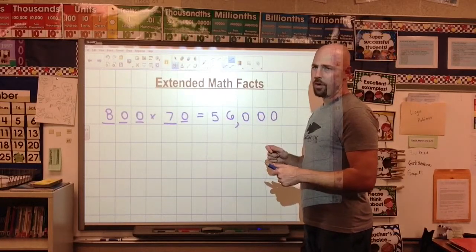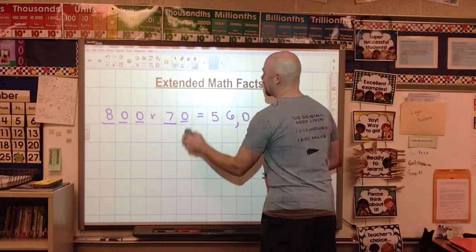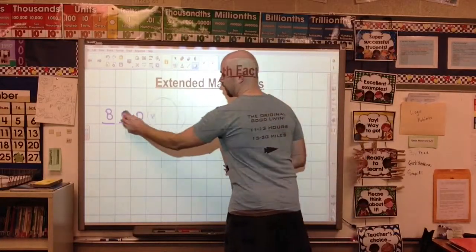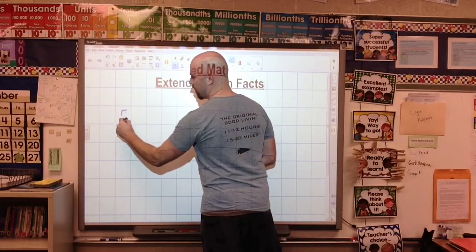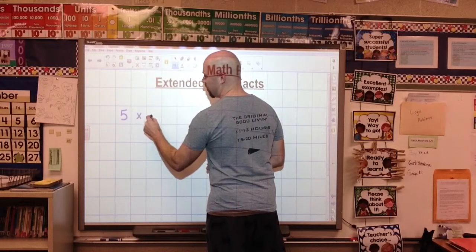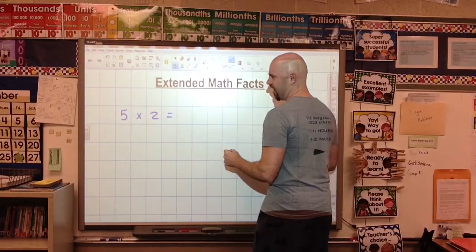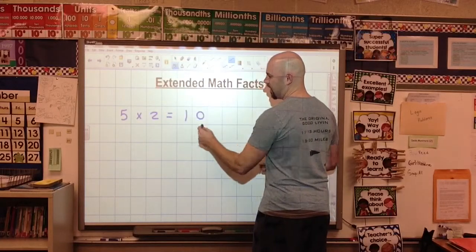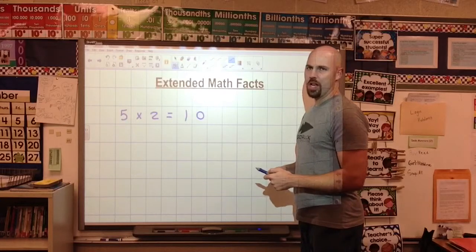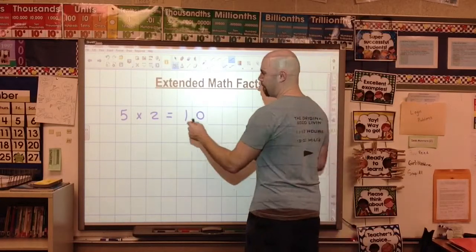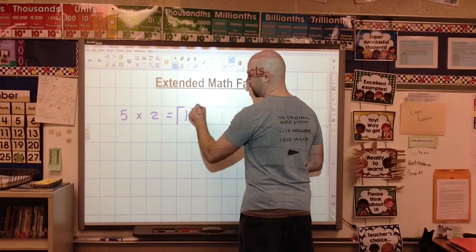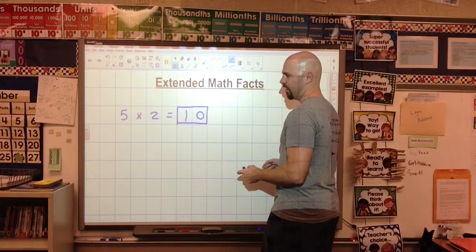One trick I want to show you to make sure your students don't make this mistake at home: when we're using, let's say, 5 times 2, because 5 times 2 is 10, we get a little bit tricky because we already have zeros in the problem. So what I tell kids to do is to box that answer.